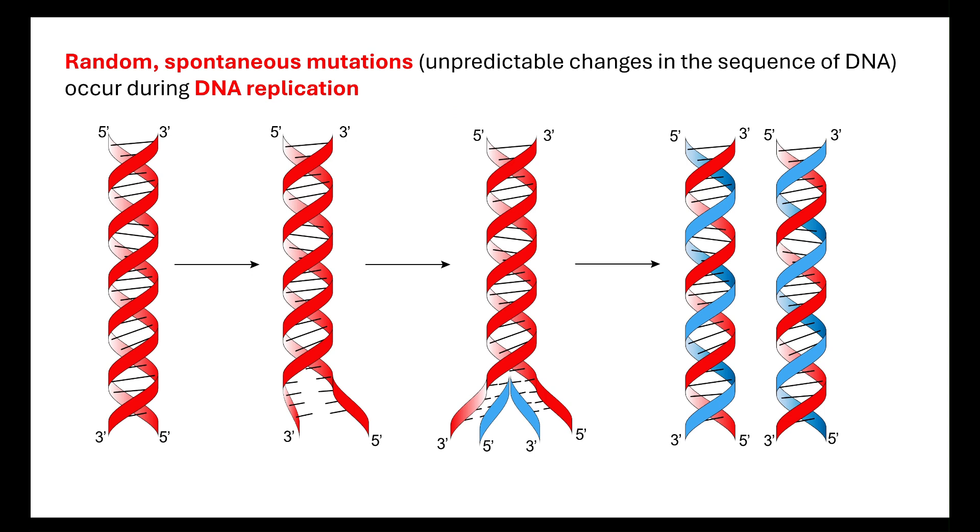Random spontaneous mutations, these unpredictable changes in the sequence of DNA, can occur during DNA replication. This is where errors have occurred through that complementary base pairing. It should line up, adenine and thymine, cytosine and guanine, but sometimes errors occur. If those errors do occur, they are random, they are spontaneous, and they will then be potentially passed on to the next generation through that process of cell division.